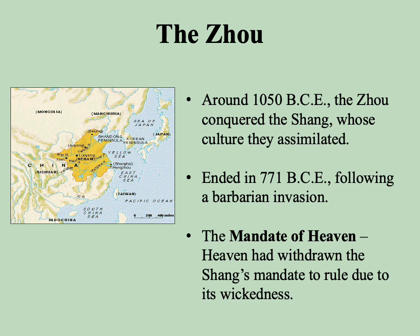The Shang eventually came to an end at the hand of the Zhou around 1050 BCE. Importantly, this reflects the development of Chinese civilization as a whole — the Zhou pretty much assimilated the culture established by the Shang. Throughout the history of China there's always a great deal of cultural continuity, even when people come from outside China and conquer it — they very quickly assimilate what's already on the ground. The Zhou will carry on until 771 BCE, when they fall to a barbarian invasion.